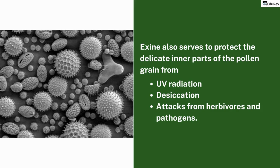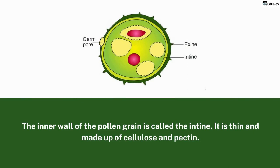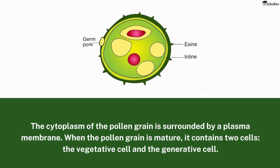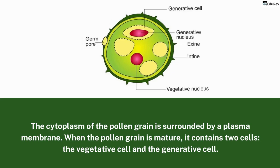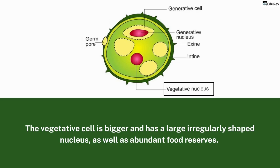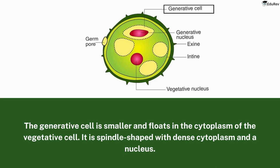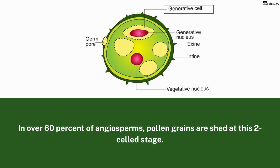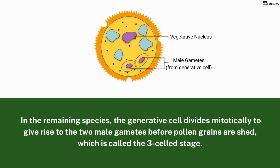Vegetative and Generative Cells: the inner wall of the pollen grain is called the intine. It is thin and made up of cellulose and pectin. The cytoplasm of the pollen grain is surrounded by a plasma membrane. When the pollen grain is mature, it contains two cells — the vegetative cell and the generative cell. The vegetative cell is bigger and has a large, irregularly shaped nucleus as well as abundant food reserves. The generative cell is smaller and floats in the cytoplasm of the vegetative cell; it is spindle-shaped with dense cytoplasm and a nucleus. In over 60% of angiosperms, pollen grains are shed at this two-cell stage. In the remaining species, the generative cell divides mitotically to give rise to two male gametes before pollen grains are shed, which is called the three-cell stage.